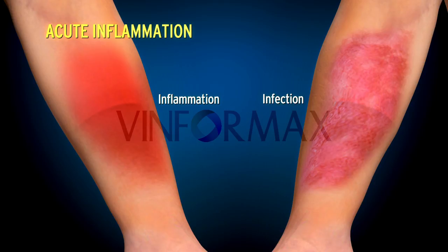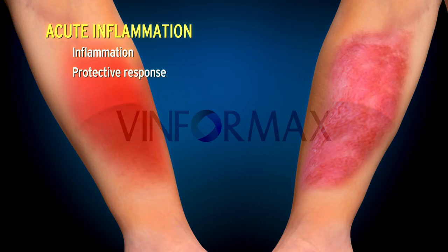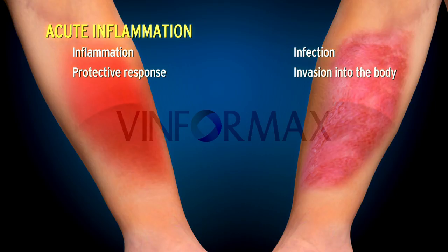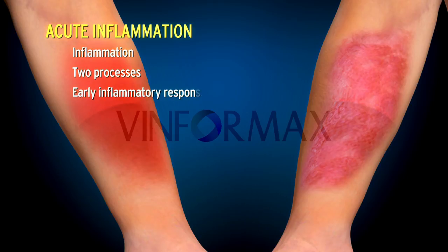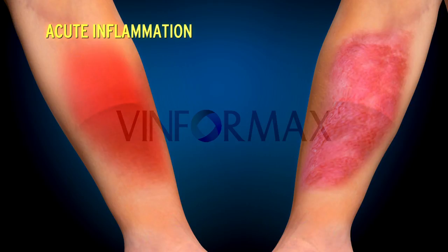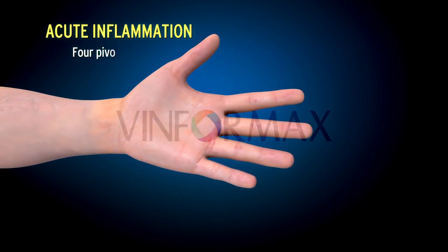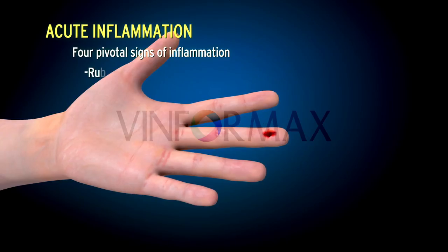Infection and inflammation are distinct from each other. Inflammation is the protective response of the body to a variety of etiological agents, whereas infection is invasion into the body by harmful microbes and their resultant ill effects by their toxins. Inflammation involves two processes: early inflammatory response, followed later by healing. Inflammation may also cause considerable harm to the body, as in the case of anaphylaxis to insect bites.